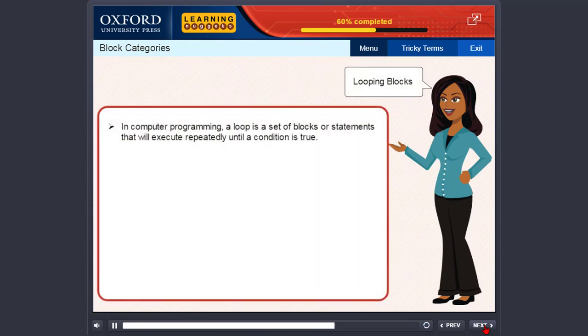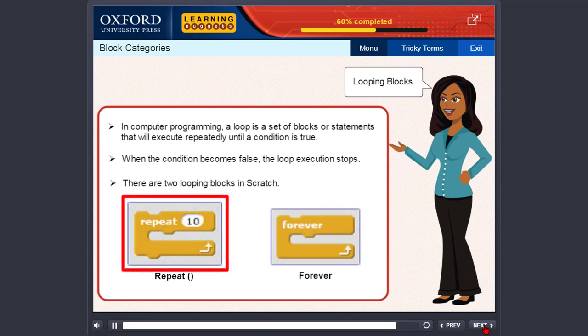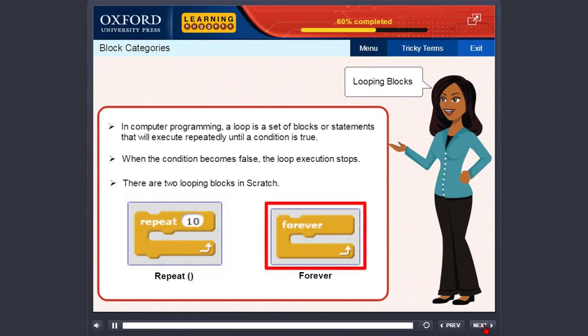In computer programming, a loop is a set of blocks or statements that will execute repeatedly until the condition is true. When the condition becomes false, the loop execution stops. There are two looping blocks in Scratch, namely: repeat and forever. The repeat block repeats an action a specified number of times, whereas the forever block repeats an action indefinitely.